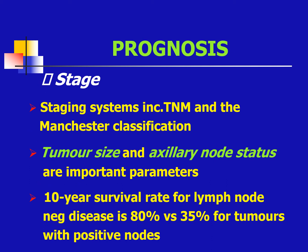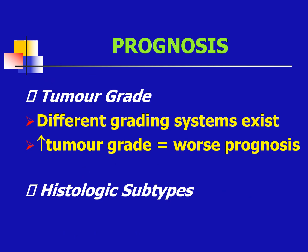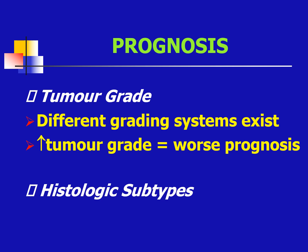Staging uses the TNM and the Manchester classification, which is based on tumor size and axillary node status. The 10-year survival rate for lymph node negative disease is 80% versus 35% for tumors with positive nodes. For tumor grade, different grading systems exist, and increased tumor grade results in a worse prognosis. Prognosis also depends on histologic subtype, hormone receptors — estrogen and progesterone receptors — and certain molecular markers such as C-MYC and P53.